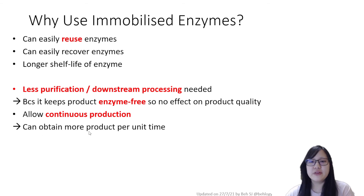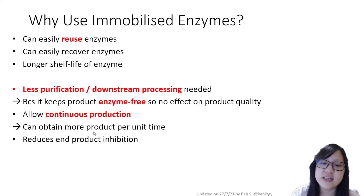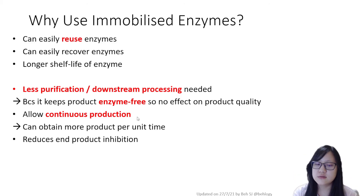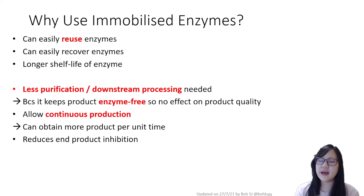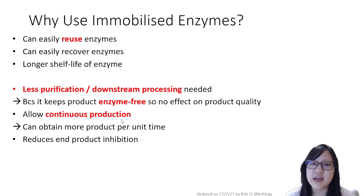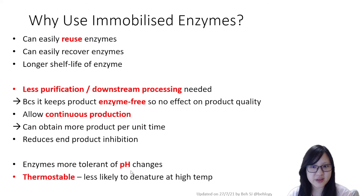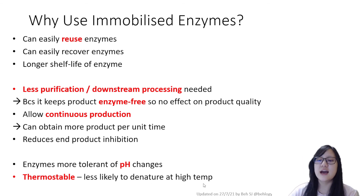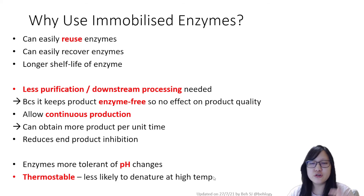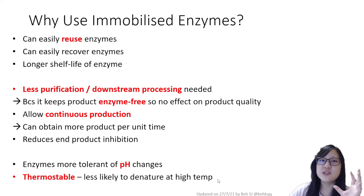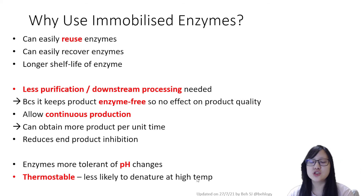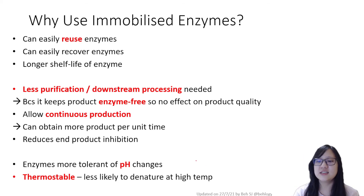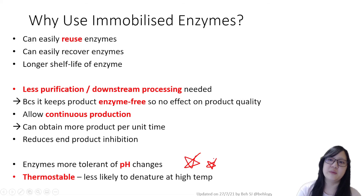Another benefit of the enzyme and product being separate is that if end-product inhibition is occurring, it is reduced entirely, since the product cannot interact with the enzyme. Perhaps the best feature of immobilized enzymes is that they become more tolerant of pH changes and more thermally stable — less likely to denature at high temperatures. This means we can increase the temperature to speed up reactions without the enzymes denaturing as quickly.